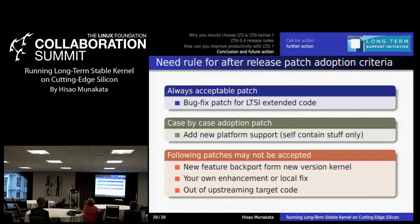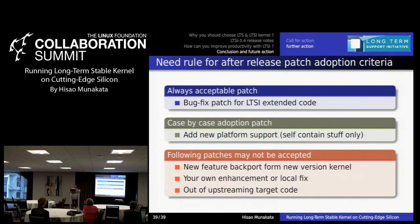I continue discussing with Greg about rules for partial adoption criteria. Today he suggested creating two separate trees: a bug-fix-only tree that is conservative, and a more aggressive staging tree for extra features. The bug-fix-only code goes into the LTSI bug-fix tree, while more aggressive code can be collected in the LTSI staging code. This kind of coordination will likely happen in one or two months. At least today you can understand the LTS, LTSI, the patchwork system, and the Yocto recipe to manage these kinds of activities.